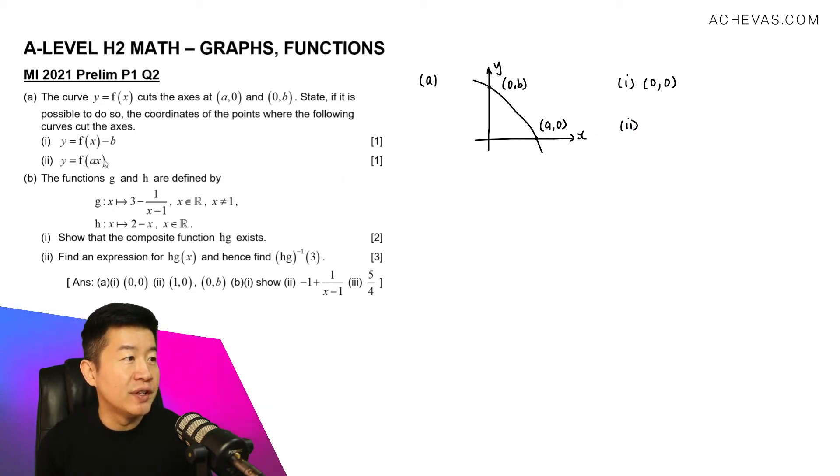In part 2, it is going to undergo this transformation y equals f(ax). So the transformation will be a scaling by a factor of 1 over a parallel to the x-axis. So for this point here, it is going to become (a/a, 0), which is going to become the point (1,0). So this will be the new x-intercept.